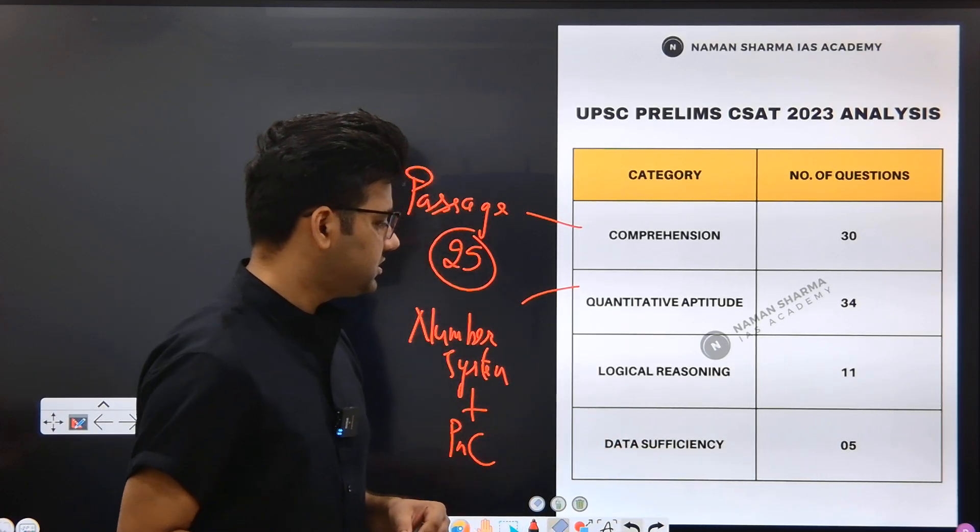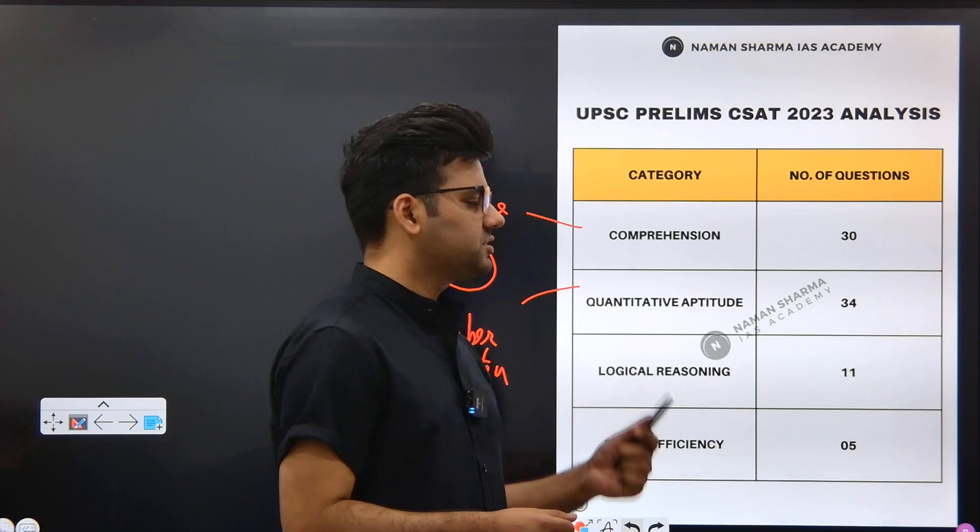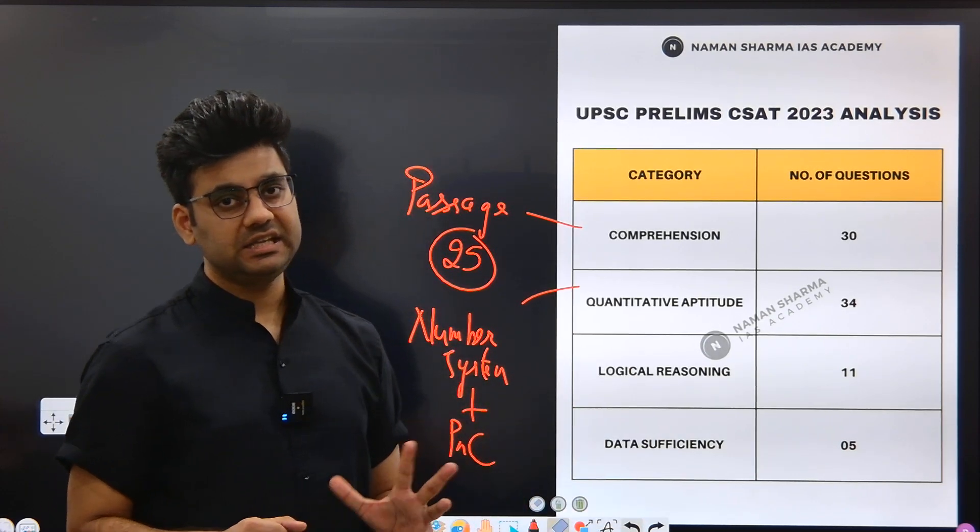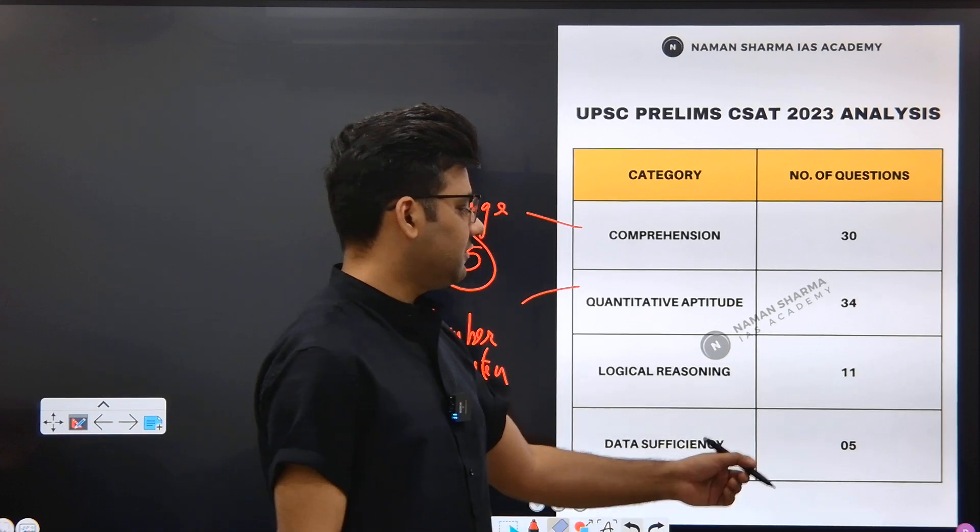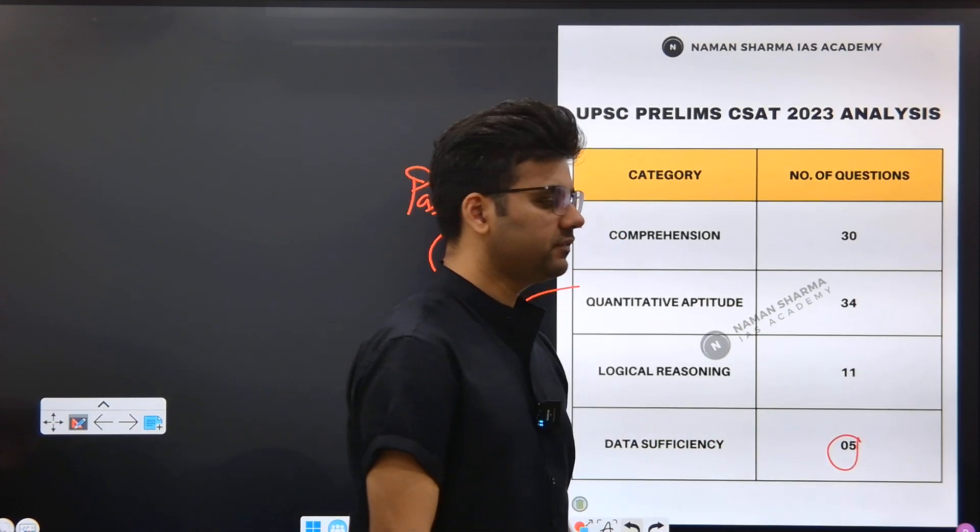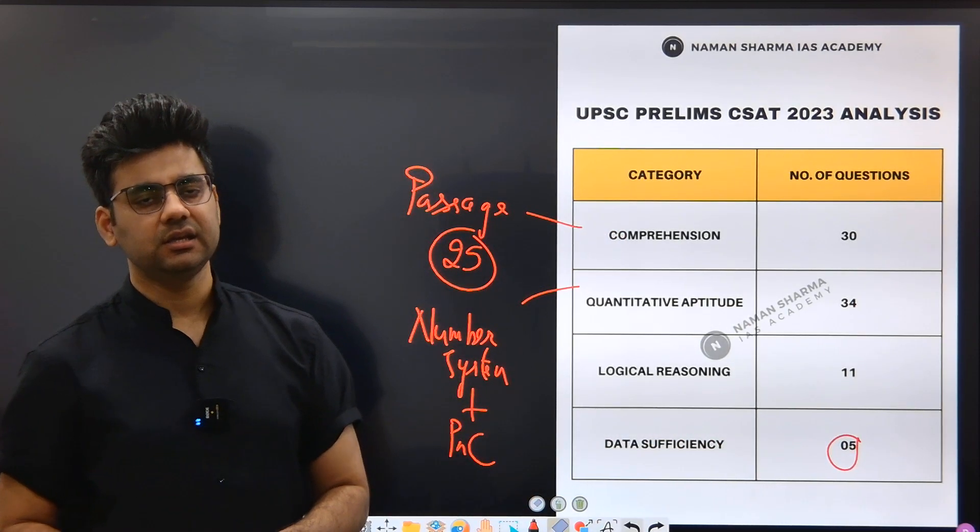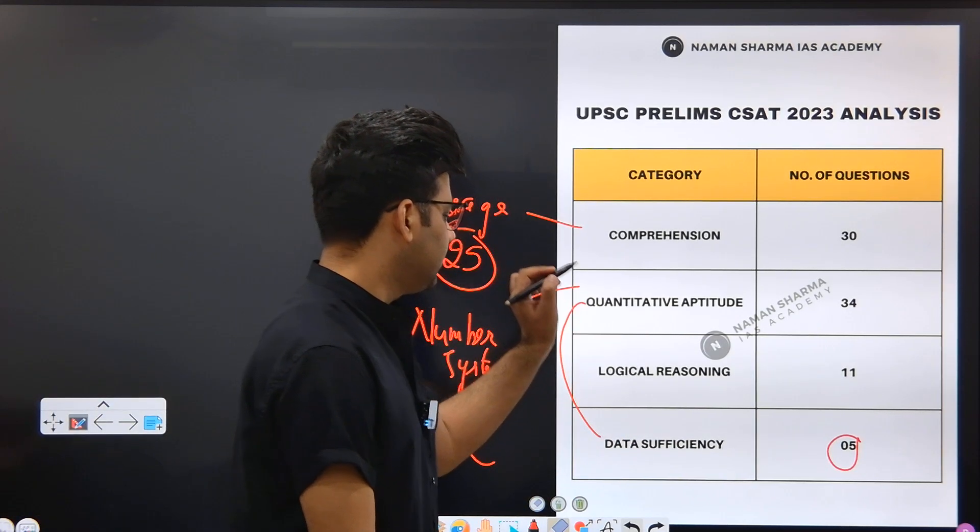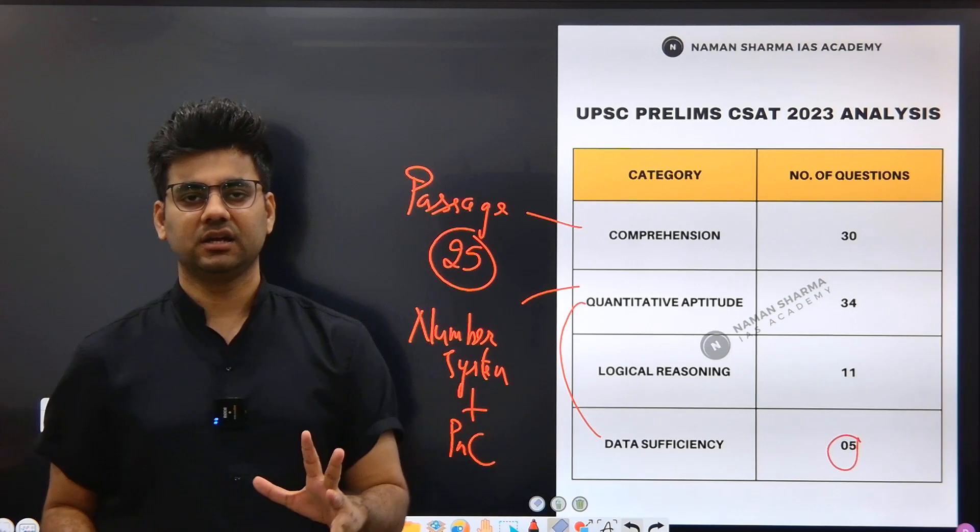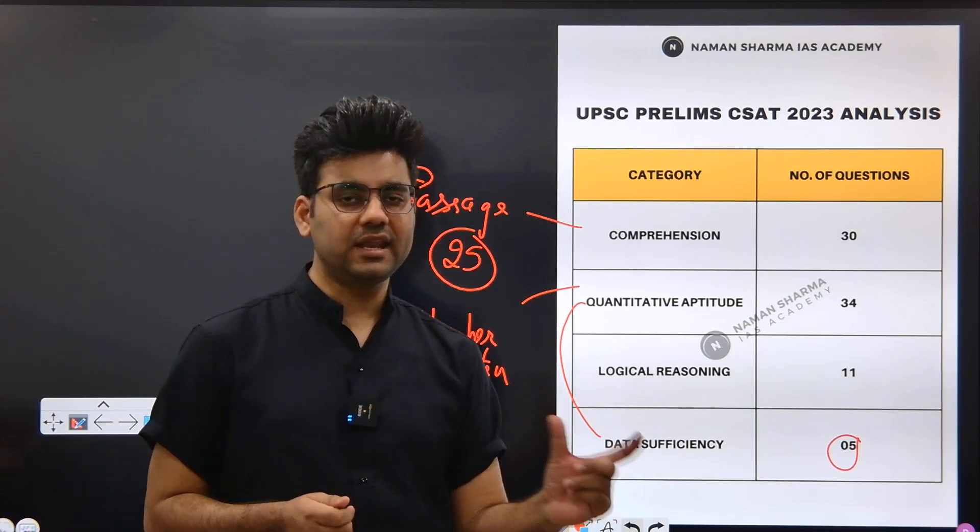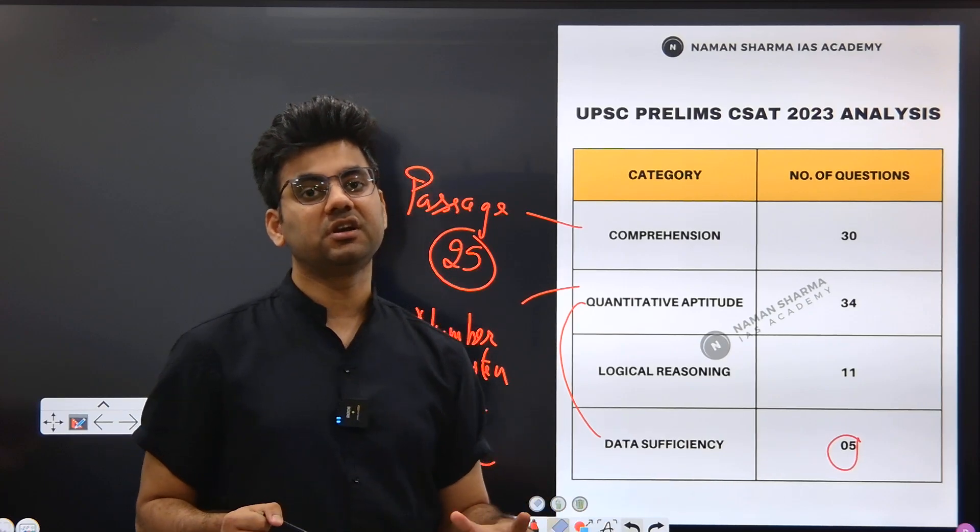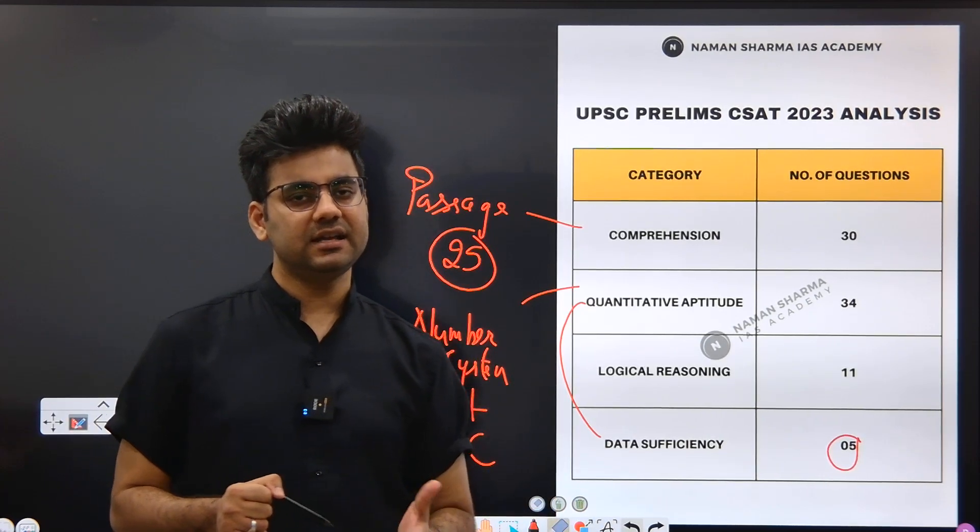Next is your data sufficiency. Data sufficiency ke questions 2022 mein UPSC ne pehli baar include kiye the and those were very easy questions. This time they have increased the number from 3 to 5. Is baar paanch questions aaye the exam mein and isko thoda sa unhone numerical form ke saath attach kar diya tha. You have to solve a numerical equation to come up to data sufficiency questions. Thoda sa trickier part ban gaya tha. Otherwise they were solvable.